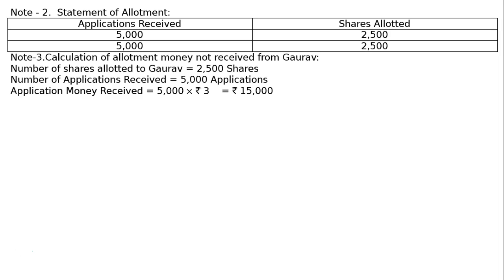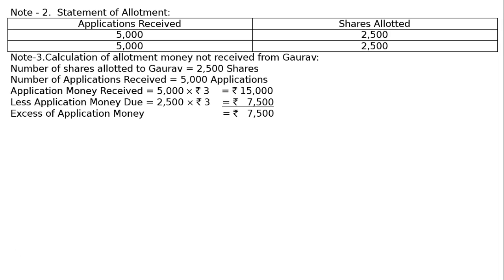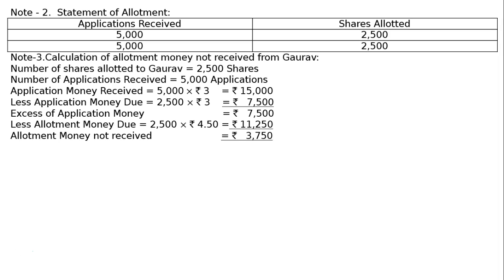Working Note 3 — Calculation of allotment money not received from Gaurav: Shares allotted to Gaurav = 2500; applications received = 5000. Application money received: 5000 applications × Rs. 3 = Rs. 15000 paid by Gaurav. Allotment due: 2500 × Rs. 3 = Rs. 7500, so excess application money = Rs. 7500 adjusted against allotment. Allotment due from Gaurav: 2500 shares × Rs. 4.50 (including SPR) = Rs. 11250. Therefore, allotment money not received = Rs. 11250 − Rs. 7500 = Rs. 3750.